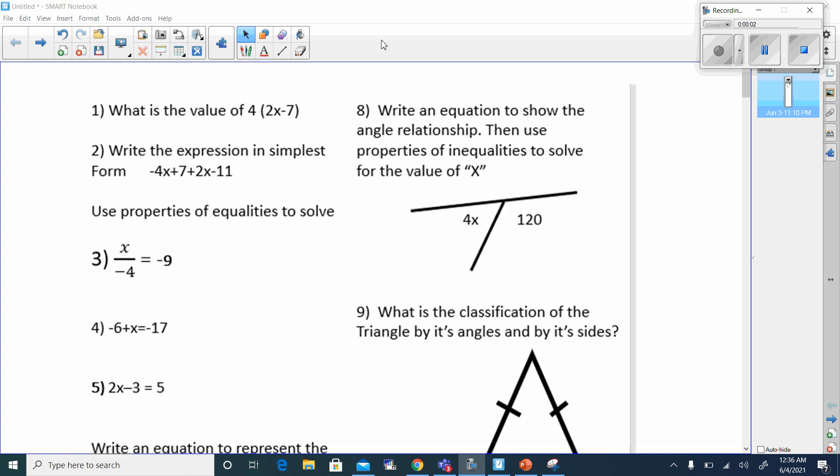If you're doing the final exam review, follow along. I'm going to be going at a pretty rigorous pace. First one is distributing properties with a value of 4 times 2x, that's going to be 8x, and 4 times negative 7, that's going to be negative 28. Done.